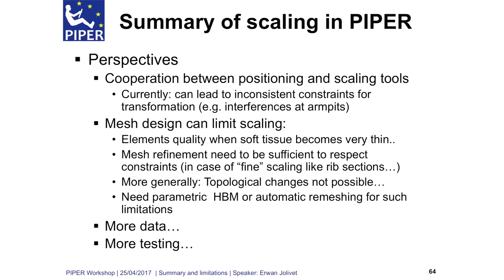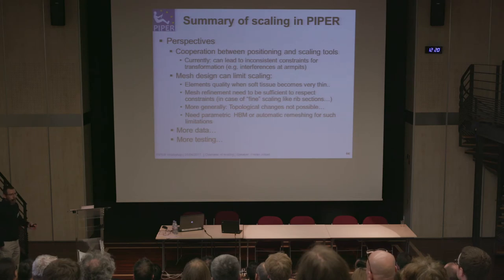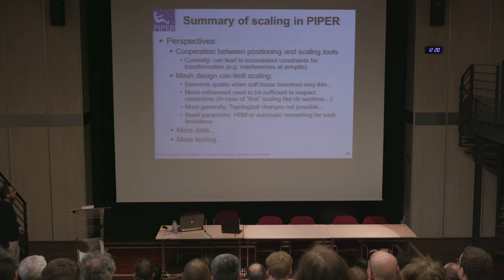We also have some limitations, not due to numerical methods, but due to mesh design. Regarding mesh quality when soft tissue becomes very thin, we have a fixed mesh density and mesh size at the beginning, but when soft tissue is very thin, we need methods to either remesh locally or use a parametric mesh that adapts to the local size of the soft tissue. Another limitation is that using the morphing or control method, there are no topological changes of the mesh — it is not possible. For all statistical tools implemented in Piper, the more data we have, the more statistically accurate and population-adapted the results will be. More testing will also be helpful to understand how we can better instruct the scaling workflow.